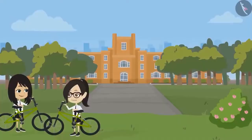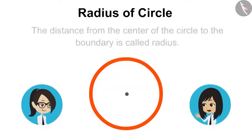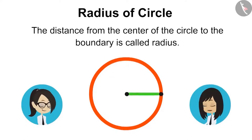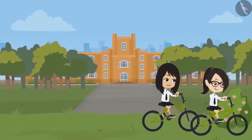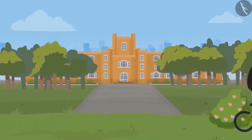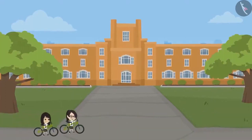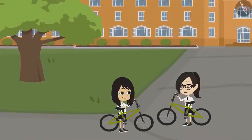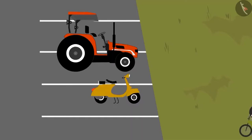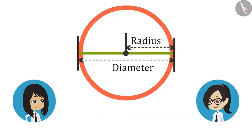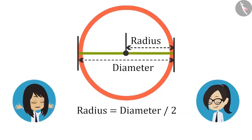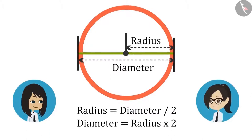Now remains the radius — the distance from the centre of the circle to the boundary is called radius. To measure the circle, you can measure either radius or diameter, but radius will be easier to measure because it is smaller — in fact, it is half the diameter. Sir told us that radius is diameter divided by 2, which means diameter equals 2 times the radius.